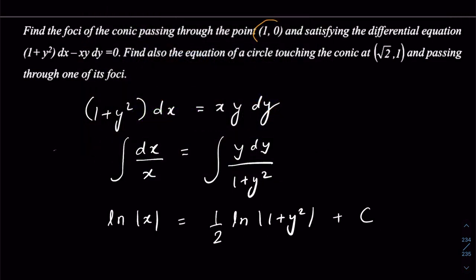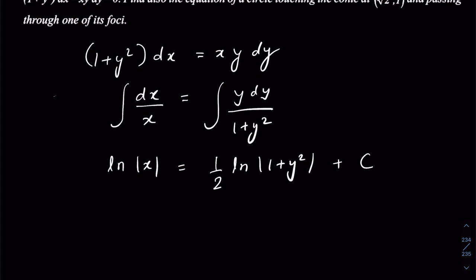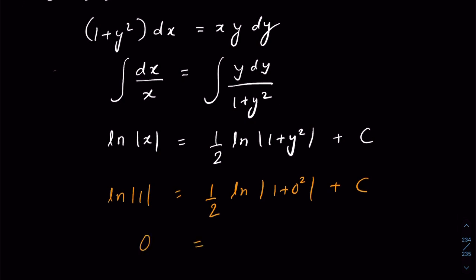The conic passes through (1, 0), so we use this information to get the value of the arbitrary constant. Substituting x = 1 and y = 0, we get ln(1) = ½ ln|1 + 0²|, which gives c = 0, since ln|1| = ln(1) = 0.